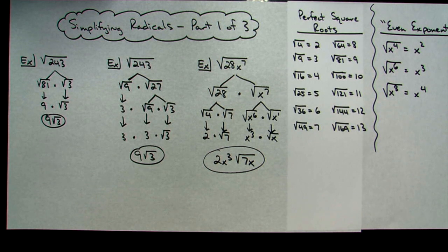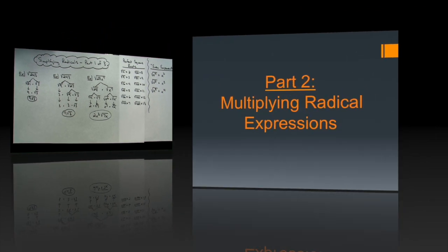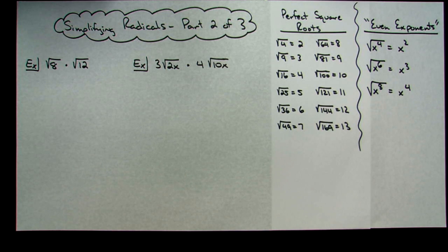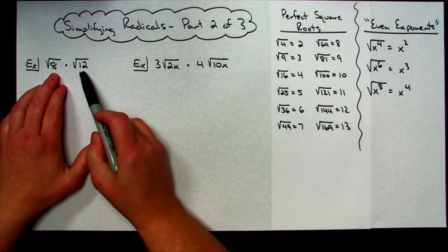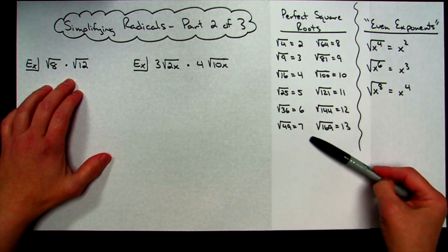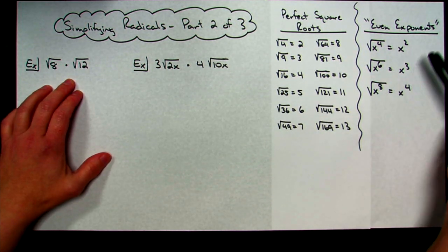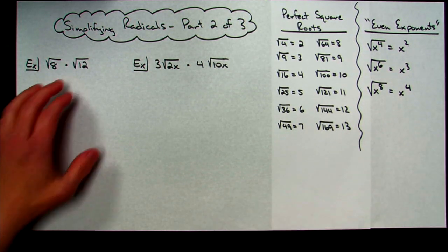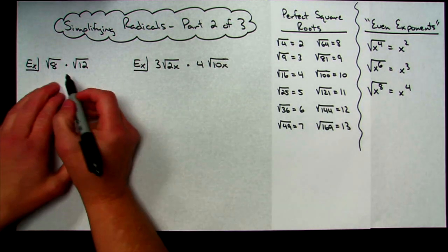Those were three short examples on the basics of how to simplify radicals. Now this is video number two of three on simplifying radicals. All of these examples are going to deal with multiplication — problems that say simplify but involve multiplying radicals. I still have my list of perfect square roots, and we'll review that even exponents simplify by taking half the exponent.